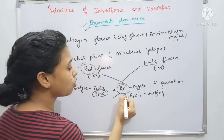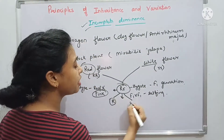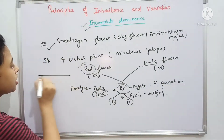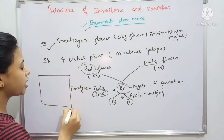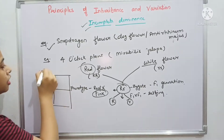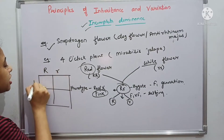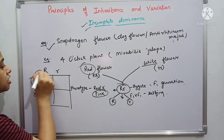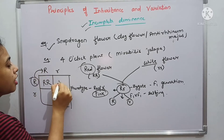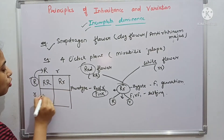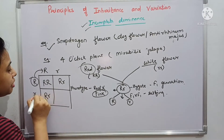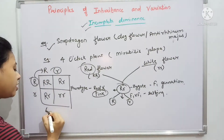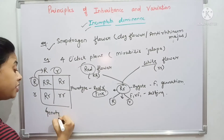In selfing, it produces two types of gametes. If we look at the Punnett square, the genotypes we get are: capital R capital R, capital R small r, capital R small r, and small r small r. This genotype ratio is the same in both law of dominance and incomplete dominance — it is 1:2:1.